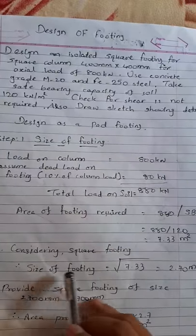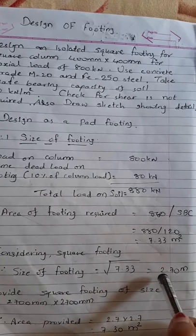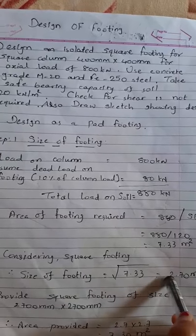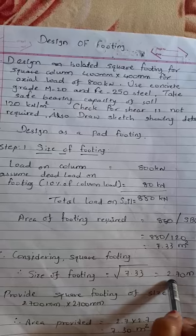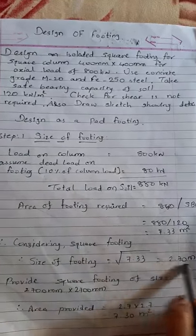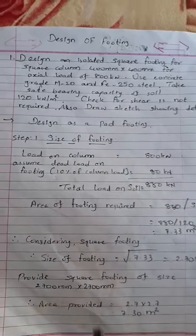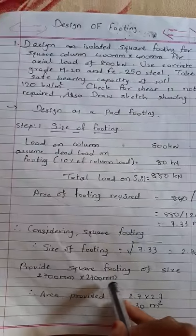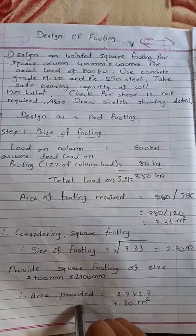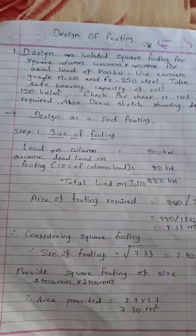Considering a square footing, size of footing = √(area of footing) = √7.33 = 2.7 m. If the figure were different, we would round up to the next larger value; here 2.7 m is already rounded. So provide a square footing of size 2.7 m × 2.7 m (i.e., 2700 mm × 2700 mm). Area provided = 2.7 × 2.7 = 7.29 m².